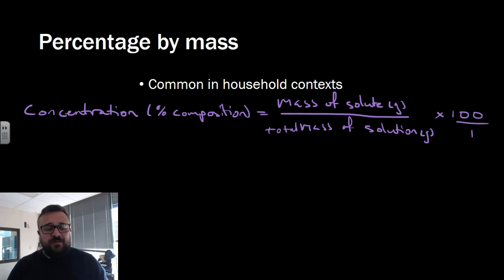Concentration as percentage composition is the mass of the solute, that which is dissolved, divided by the total mass of the solution—not the solvent, the solution, both of those in grams—times 100 to make a percentage.